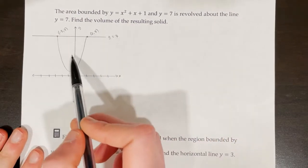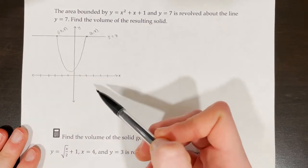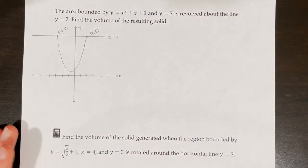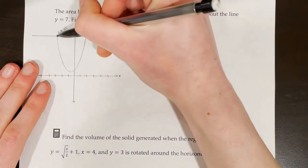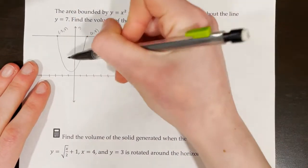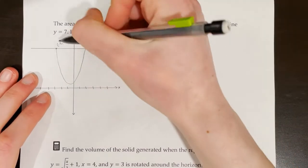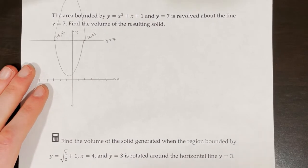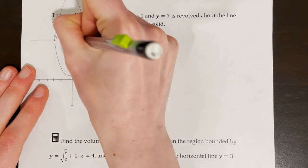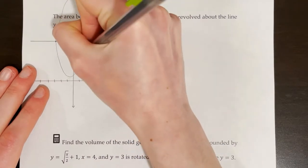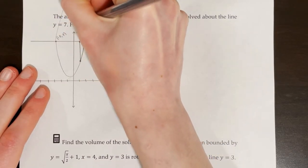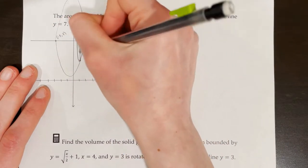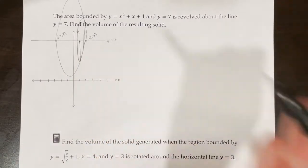Instead of revolving this parabola around the x-axis, we're going to be revolving it around the line y equals 7, which is another horizontal line. The next step is to sketch in what the other half of the revolution looks like. If you rotate this around y equals 7, the other half is going to look something like that. Then sketch in one radius and the disk that goes along with that radius — just so you can visualize it.